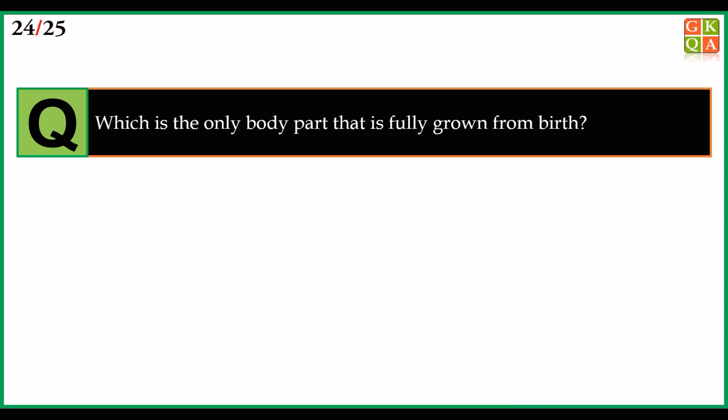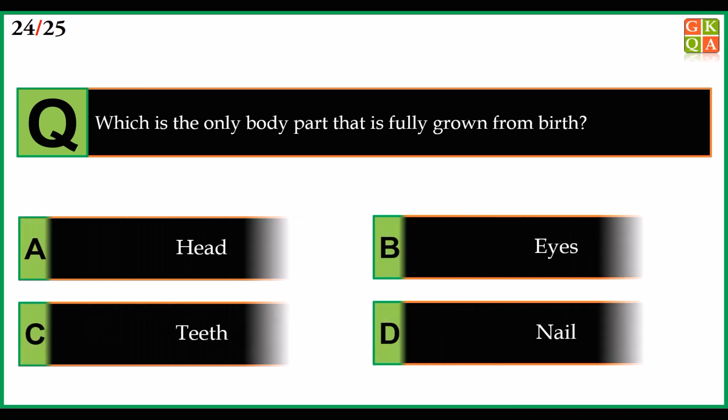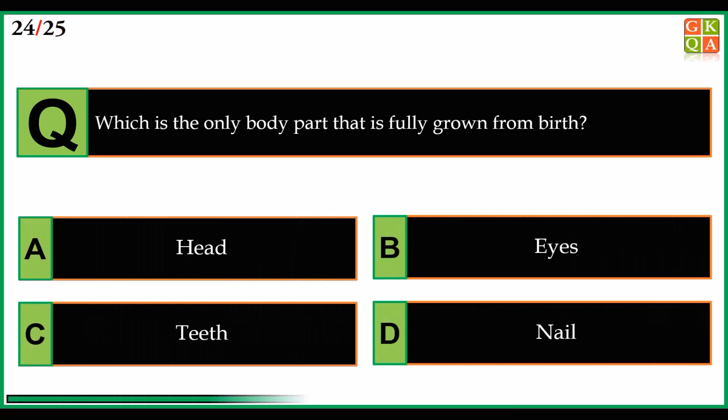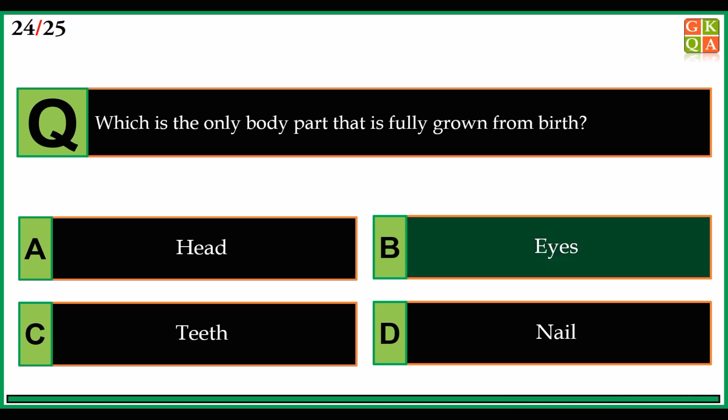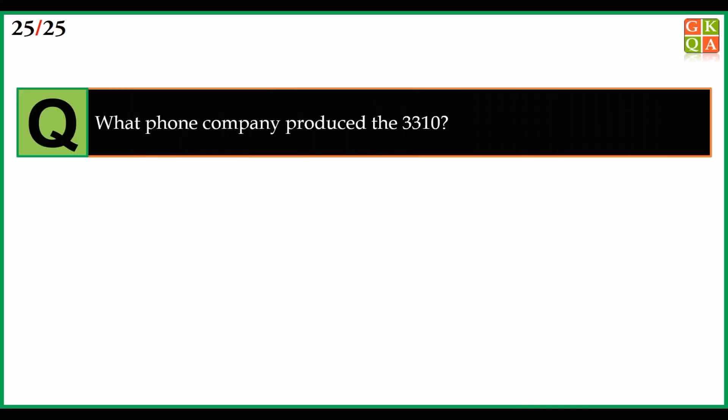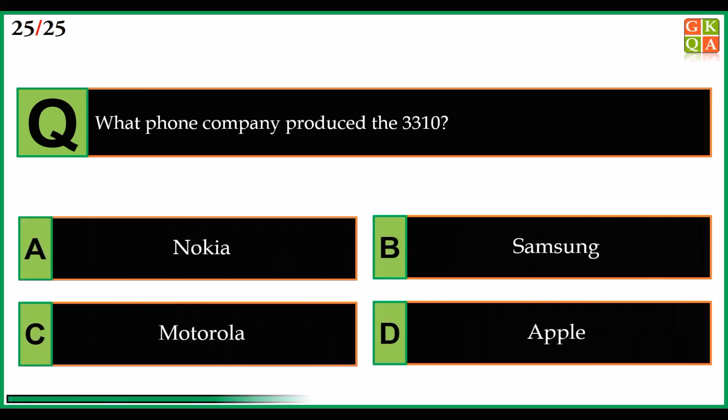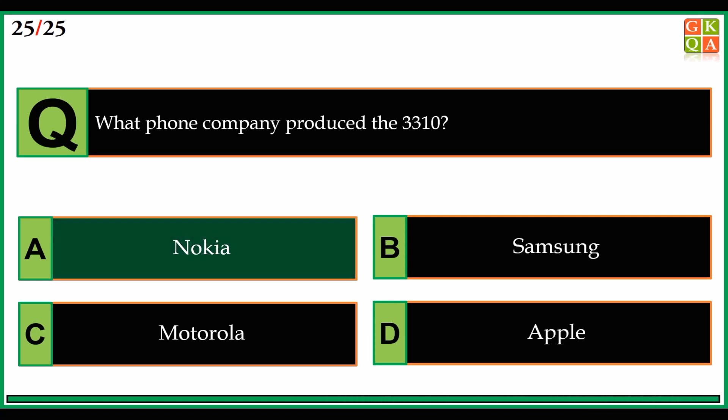Which is the only body part that is fully grown from birth? Answer: option B, eyes. What phone company produced the 3310? Answer: option A, Nokia.